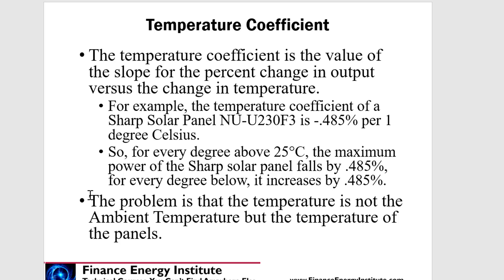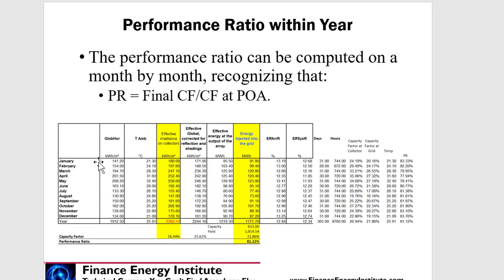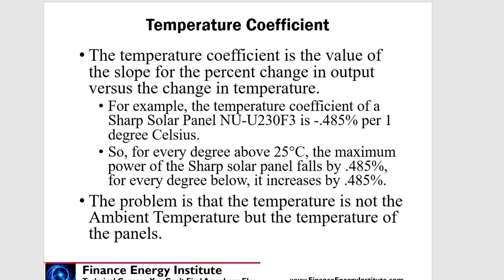Now let's talk about the temperature coefficient and the problem with it. It's like a slope — it's the percent change in the output to the grid when you have a one-degree change in temperature. For example, this Sharp Solar panel has a temperature coefficient of 0.485%: for every one degree change in temperature you get a 0.485% reduction — less than half a percent. But the problem is this temperature change applies to the actual panel temperature, not the ambient temperature that's always shown in reports. How do we get the panel temperature?